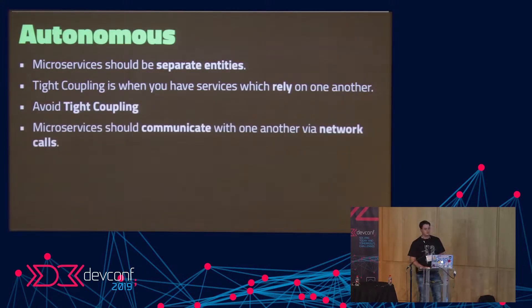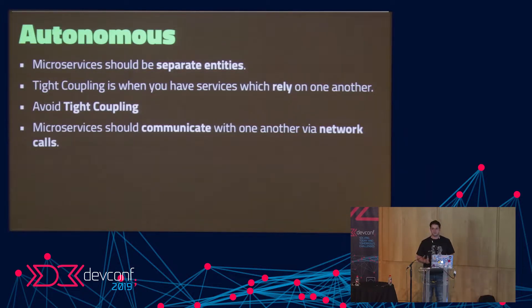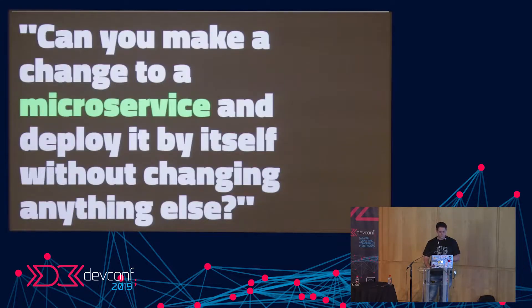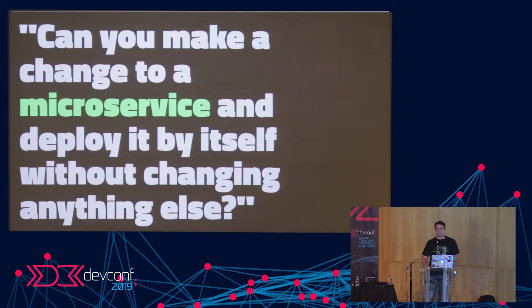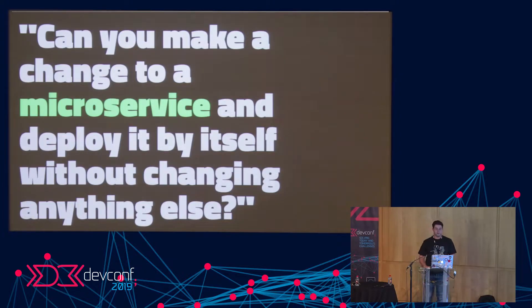In terms of how microservices should communicate, they should communicate with one another via network calls. If you're wondering whether your microservice is autonomous, the golden rule is: can you make a change and deploy it by itself without changing anything else? If the answer is no, then your microservice is definitely not autonomous and not isolated.